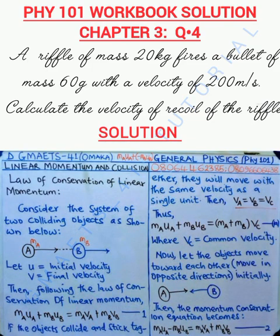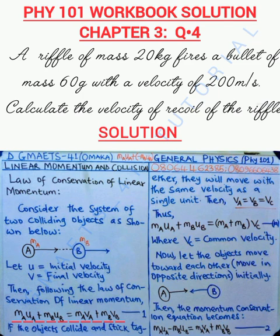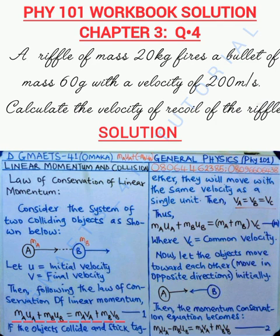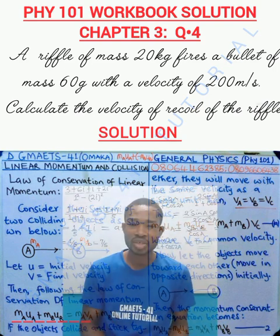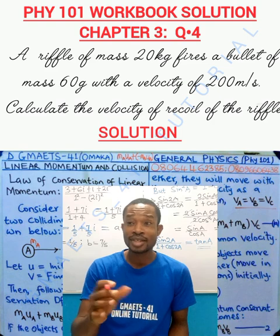This is a problem extracted from the concept of impulse and momentum — specifically the application of the law of conservation of linear momentum. You can see showing on the screen equation 1: MAUA plus MBUB equals MAVA plus MBVB. That equation is the equation of the law of conservation of linear momentum, which states that provided there is no net external force on a system of colliding objects, the total momentum of the system is conserved.